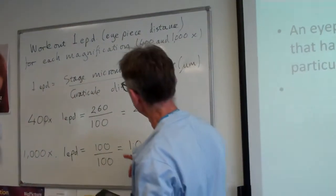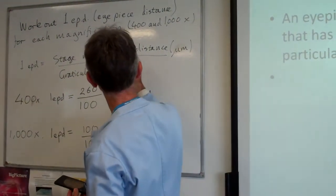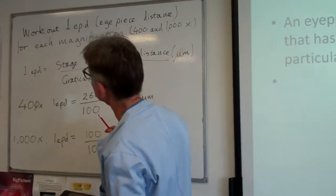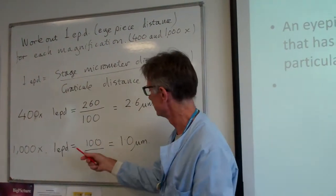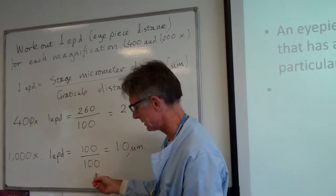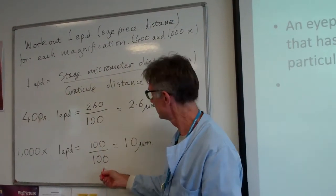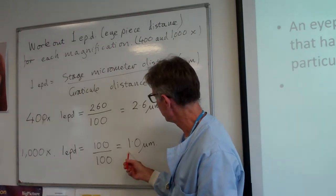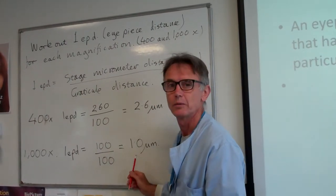I know that 10 stage micrometer units is 100 micrometers - it's 10 times 10. So it's 100 micrometers divided by the 100 eyepiece divisions. Each one of those little divisions is actually 1 micrometer.